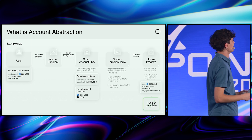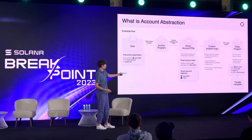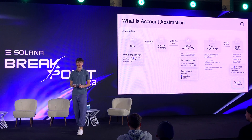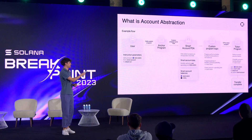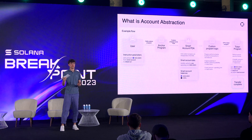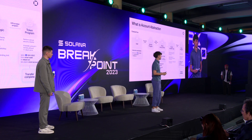A smart wallet is owned by a user. The user has 1,000 USDC in their smart wallet and wants to send 500 USDC to another user — in this case, Stepan.Sol. They call a custom program that powers account abstraction with the instruction parameters to send 500 USDC. This custom program owns a PDA — a program derived address. Essentially, the program owns an account, and this program is the only one that can make changes or even delete that account.